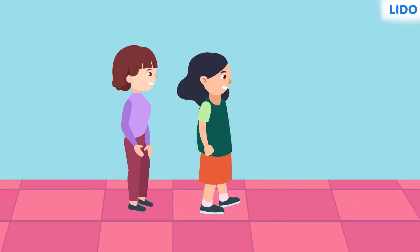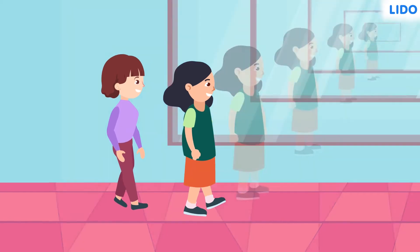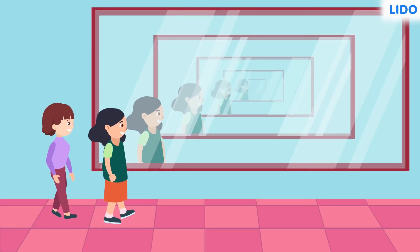Minoo went to a mall with her sister to get a new dress. As she entered the mall, she saw infinite reflections of herself.